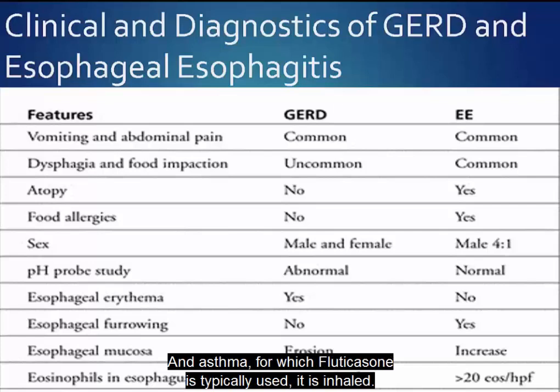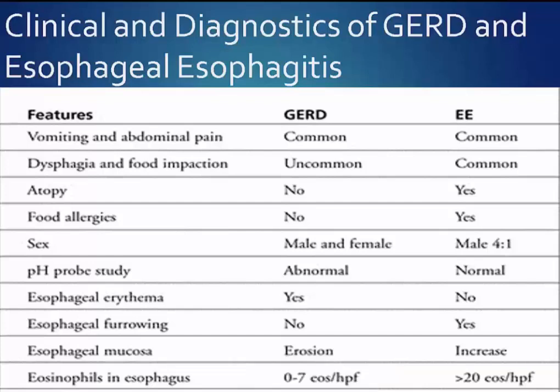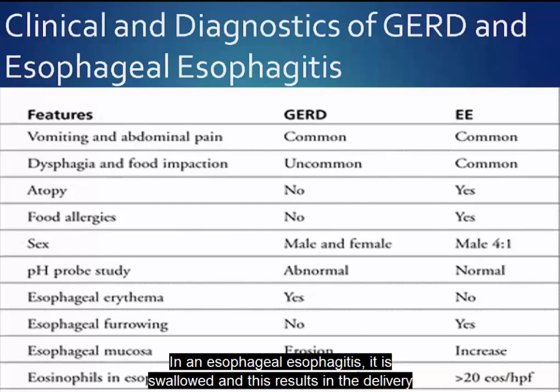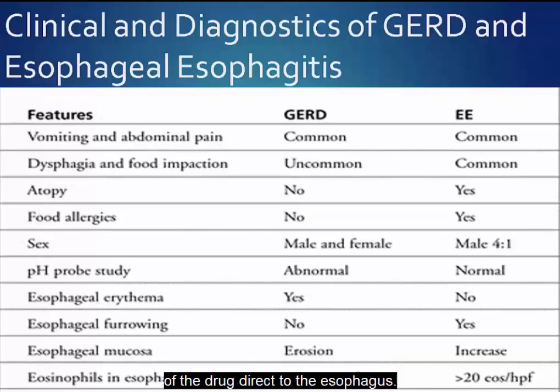In asthma, for which fluticasone is typically used, it is inhaled. In eosinophilic esophagitis, it is swallowed, and this results in the delivery of the drug directly to the esophagus.